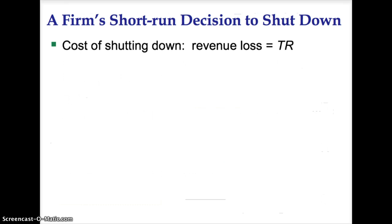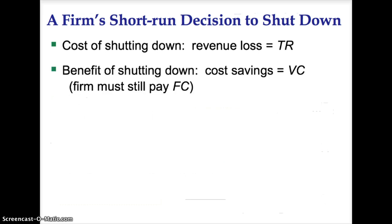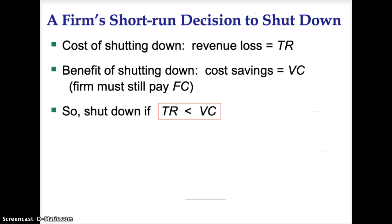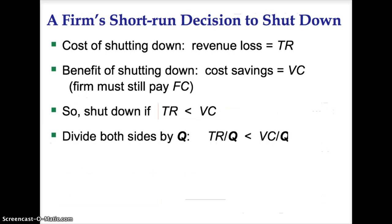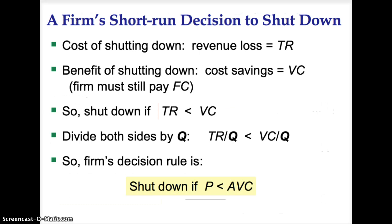The cost of shutting down is the loss of revenue, which equals total revenue, TR. The benefit of shutting down is the savings on costs, which are just the variable costs, VC, since the firm still must pay fixed costs. A firm will shut down if total revenue is less than variable costs. To simplify this, divide both sides by quantity. The firm's decision rule to shut down is if price is less than average variable costs.